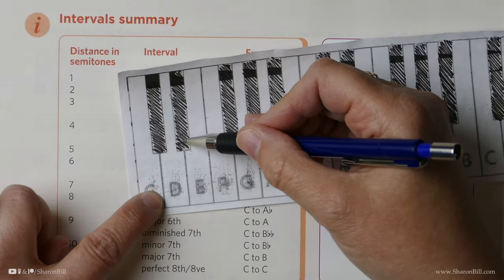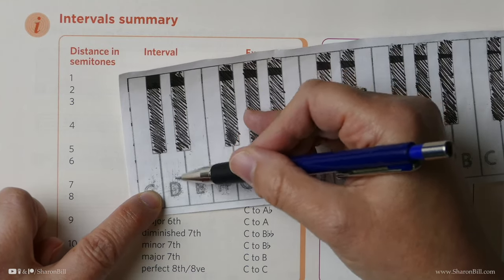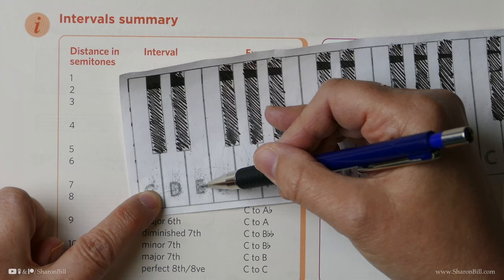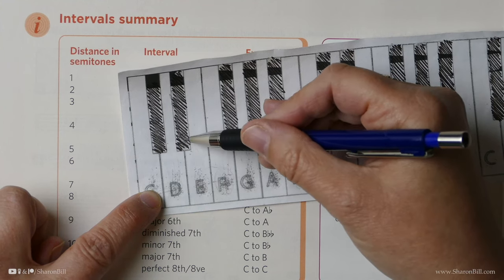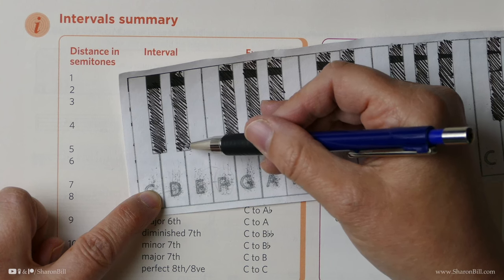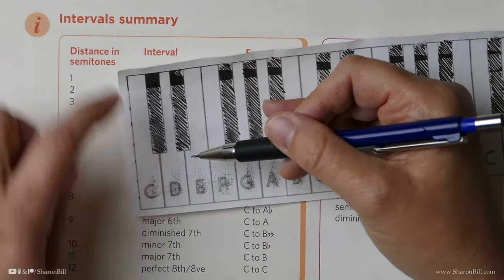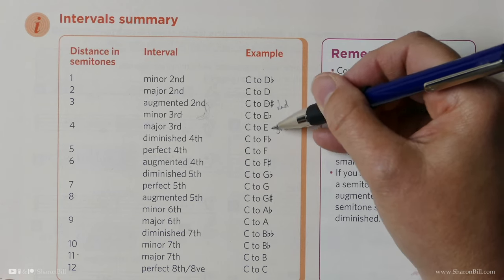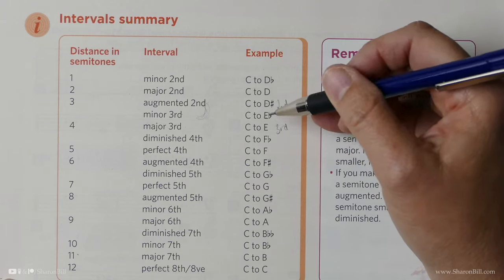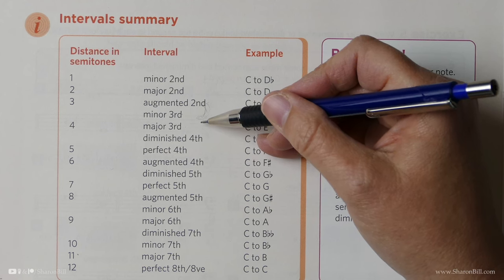C to D sharp, we're replacing the D by raising it. Or C to E flat, we're replacing the E by lowering it. Although it's the same number of semitones apart, and harmonically it sounds the same, it's a very different interval because we're replacing and representing different notes. So I don't think this gives us the whole story.